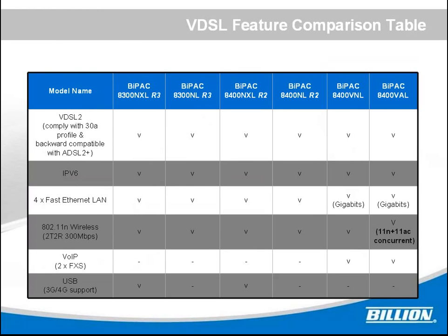The next page is a comparison table, so you could choose from the products. Once you need fast Ethernet, the 83 and 84N can meet the requirement. But if you want gigabit Ethernet for tender business, you have to choose the AD400VNL or AD400VAL. If there's an 11AC requirement, the only model we can provide is the AD400VAL.